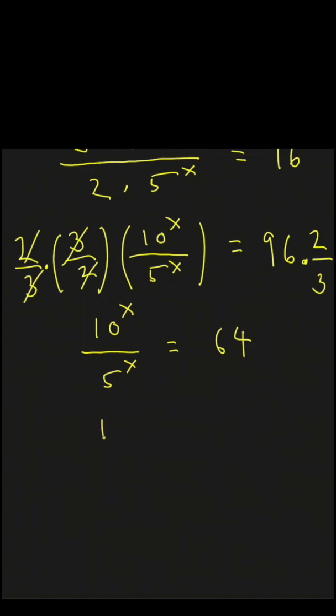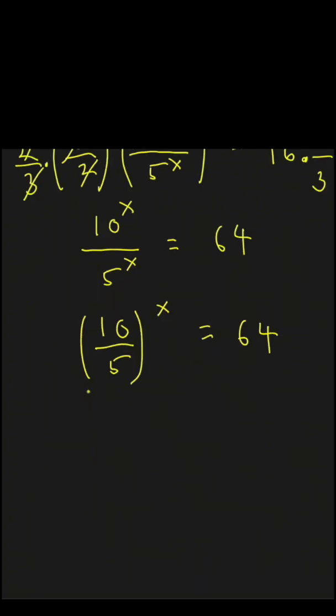Now we can write 10 to the x over 5 to the x as 10 divided by 5 to the x. And of course, 10 divided by 5 is 2.